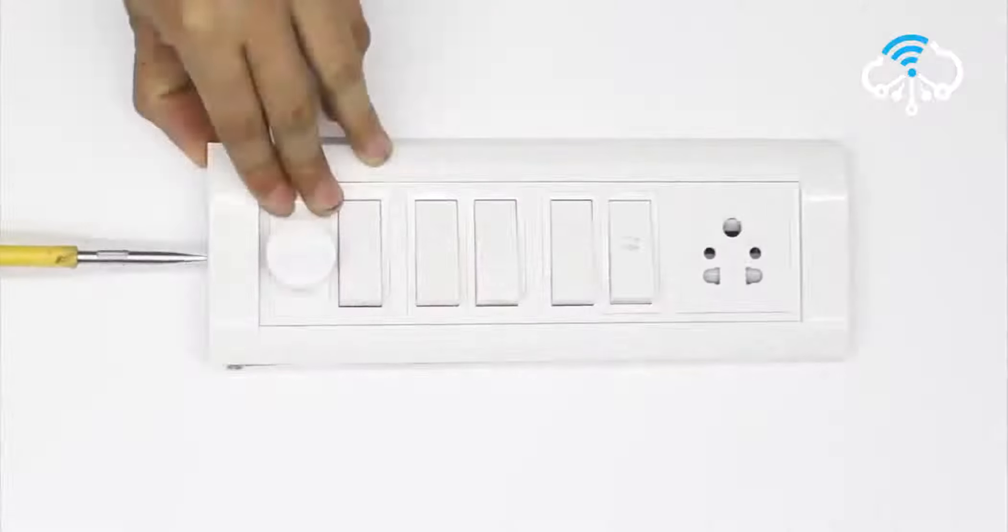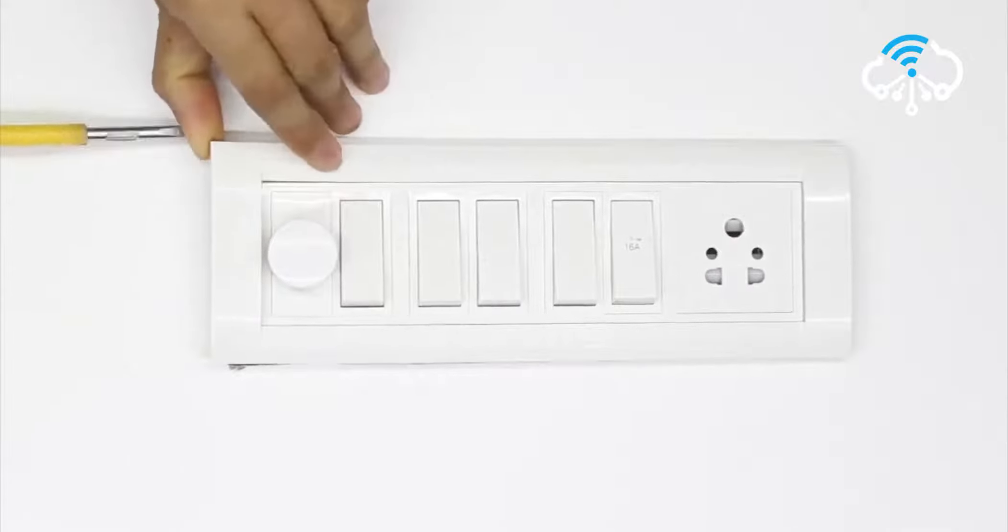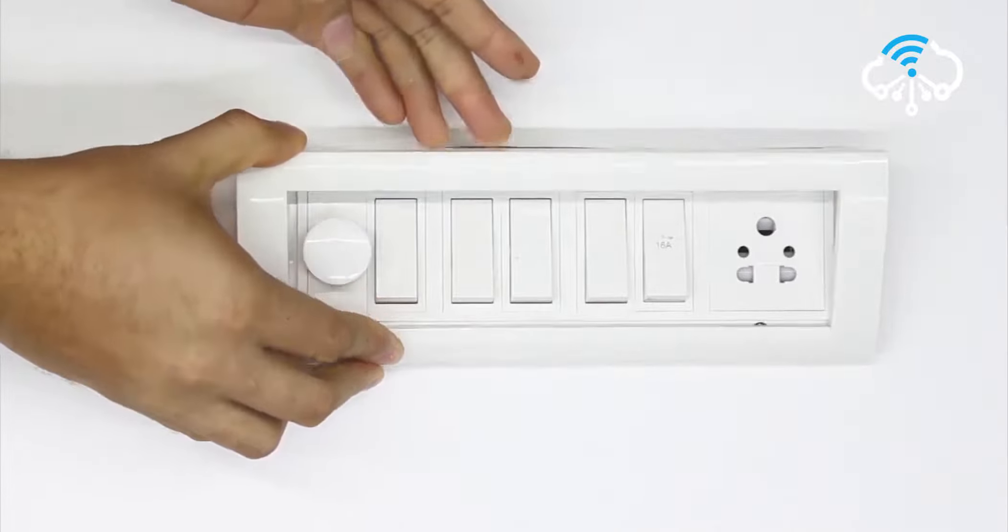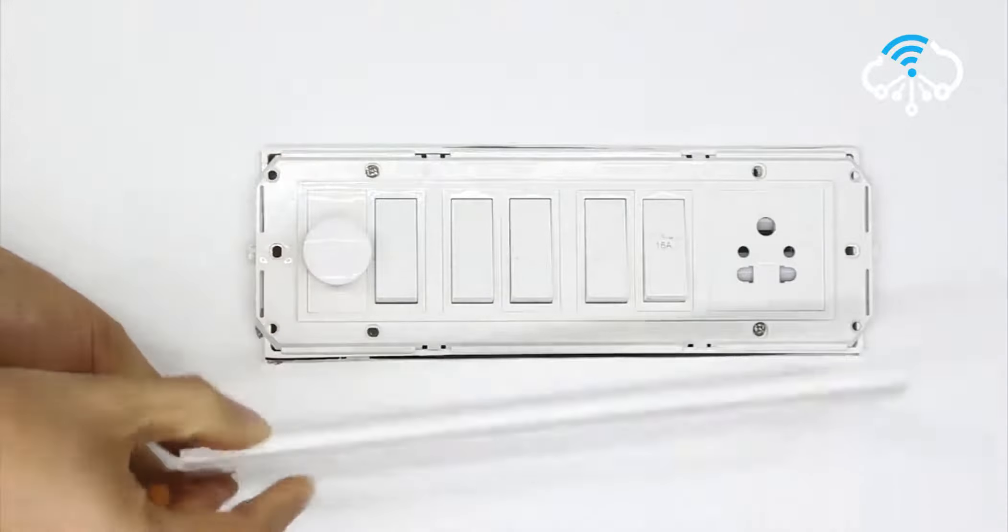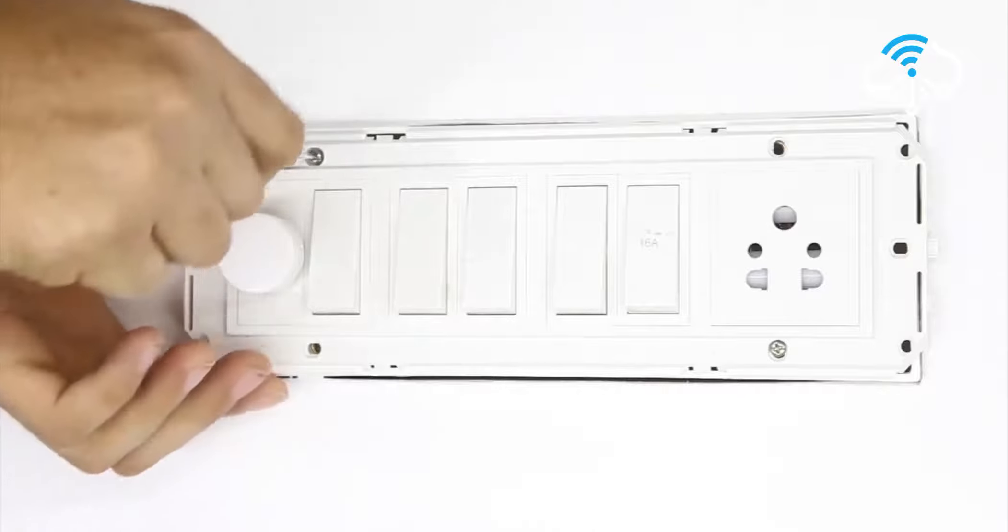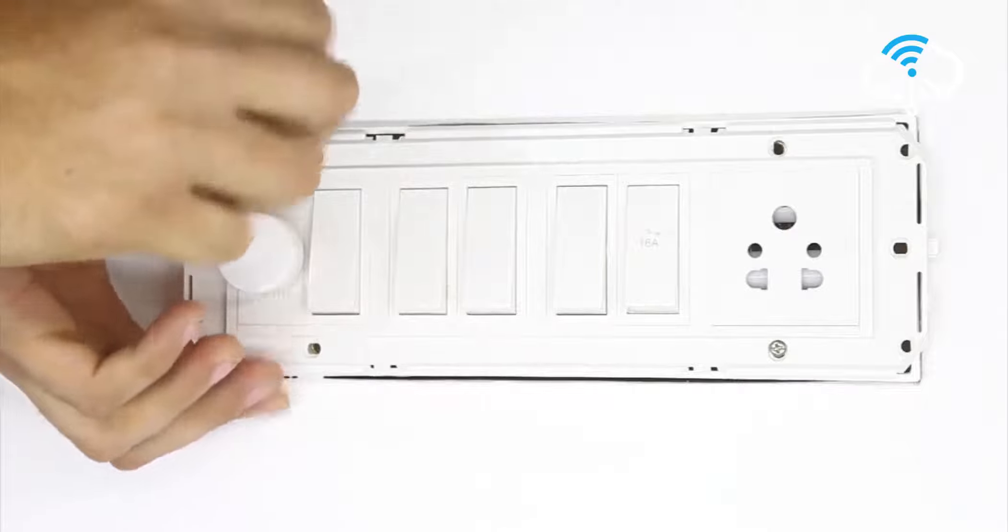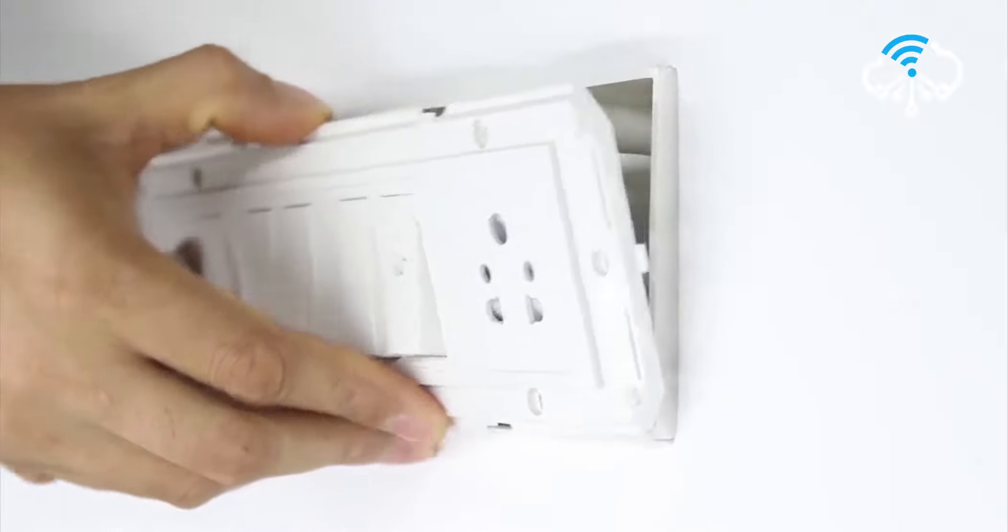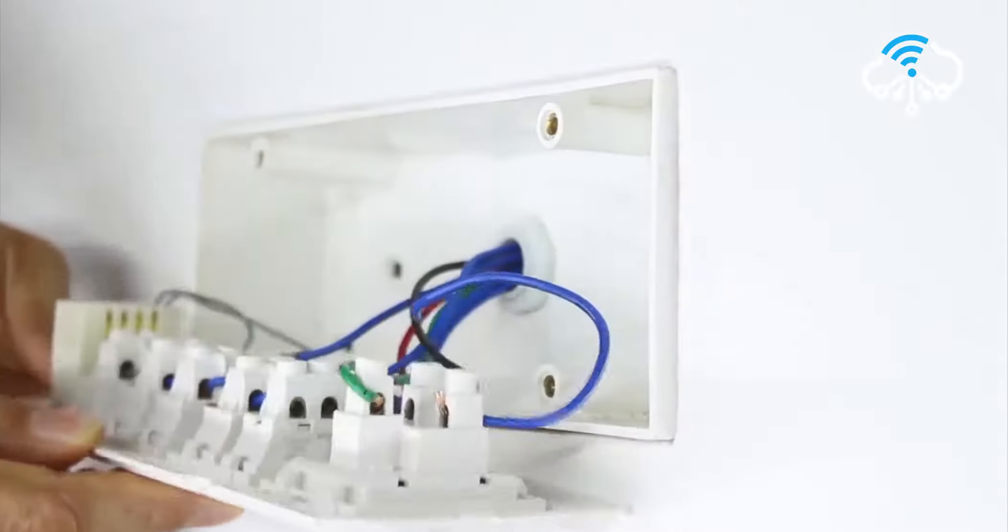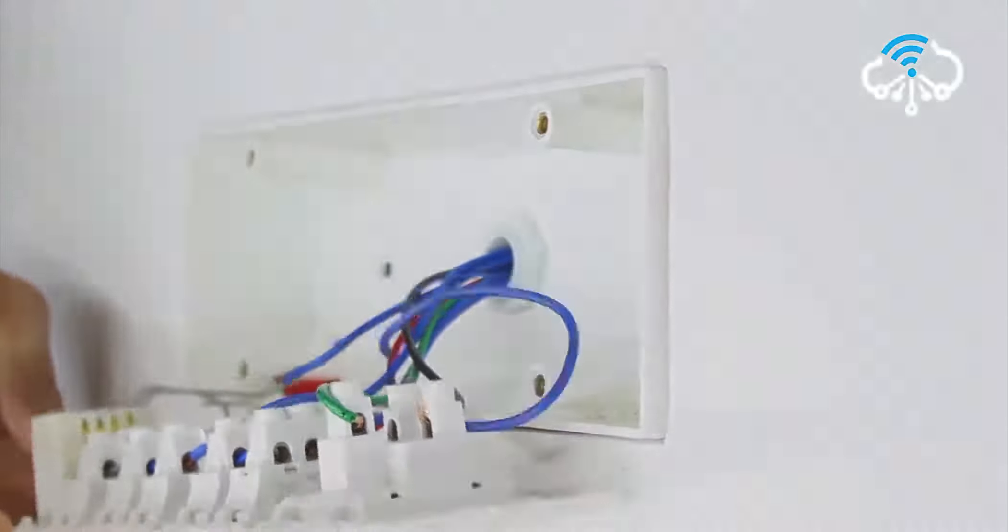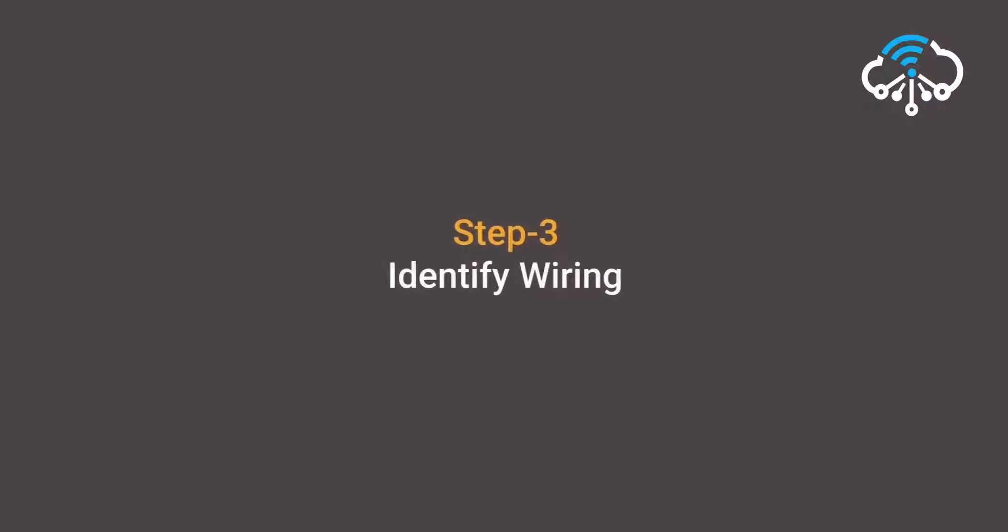Now let's get to Step 2: Open the switchboard. Now that your power is off, you can safely unmount the wall plate from the switchboard. Then using a screwdriver, open the switchboard. All right, now that the switchboard is open, let's get to identifying all the wires in it.